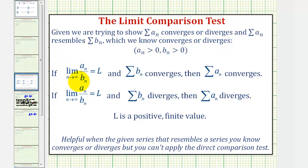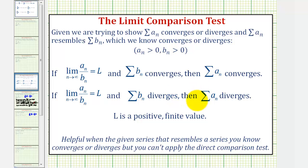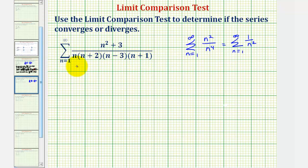So if the limit as n approaches infinity of a sub n divided by b sub n equals L, where L is positive and finite, then if the summation of b sub n converges, then the summation of a sub n converges. And if the limit is positive and finite and the summation of b sub n diverges, then the summation of a sub n diverges. But in our case, because we're comparing the given series to a known convergent series, we'll use the limit comparison test to hopefully show convergence.